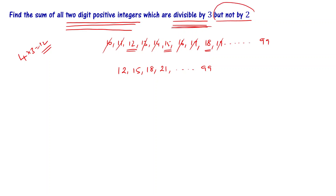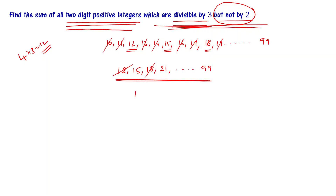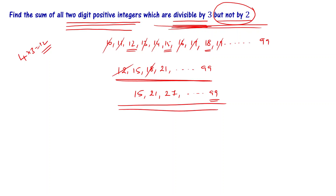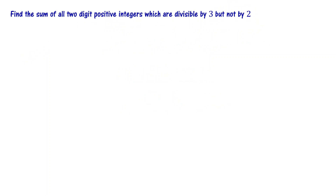Next, we need numbers divisible by 3 but not by 2. 12 is even, so we remove it. 18 is even, so we remove it. The numbers that are divisible by 3 but not by 2 are: 15, 21, 27, and so on up to 99. These are the 2-digit positive integers that are divisible by 3 but not by 2.